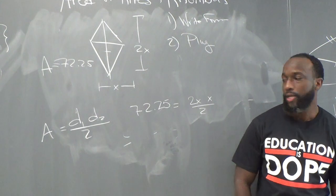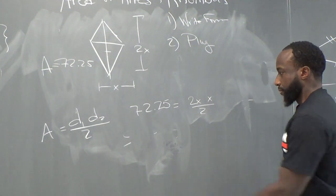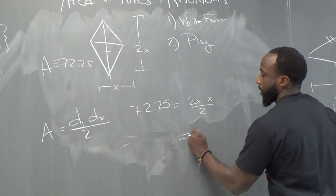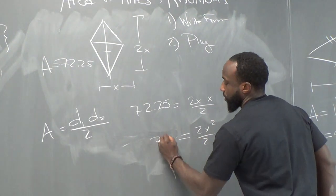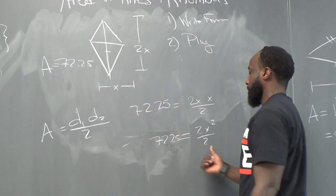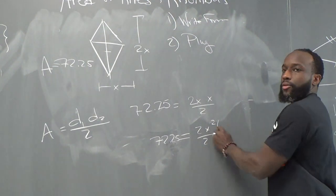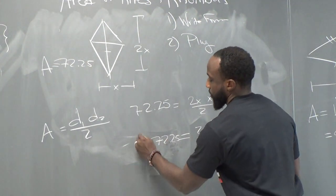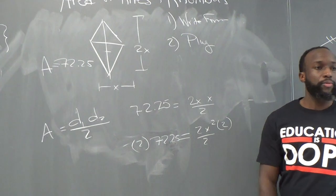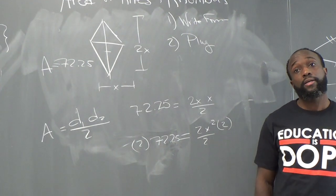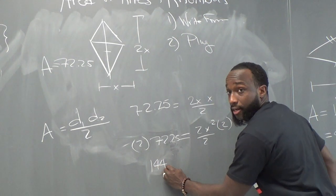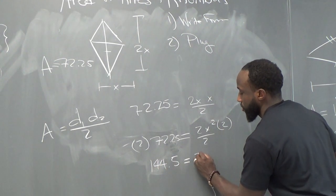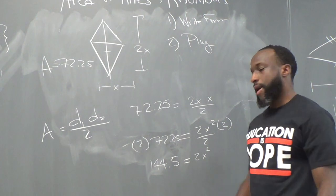Alright? So let's chug. Let's work it out. So we got these x's. We're going to get 2x squared over 2 equals 72.25. Then we're going to multiply both sides by this 2. Alright? What's 2 times 72.25? You got to calculate. Yes, sir? 144.5. 144 point what? 5. 144.5 equals 2x squared. Alright?